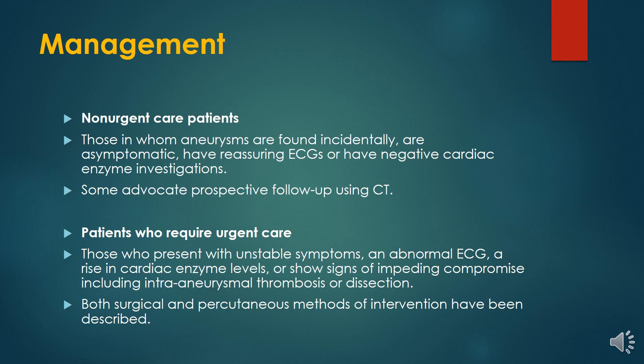For patients not in urgent need of care — in whom the aneurysm is found incidentally, who are asymptomatic, have reassuring ECGs, and negative cardiac enzymes — some advocate follow-up using CT. Patients who require urgent care, presenting with unstable symptoms, abnormal ECG, rising cardiac enzyme levels, or signs of impending compromise including intra-aneurysmal thrombosis or dissection, should be treated with both surgical and percutaneous methods of intervention.